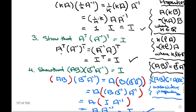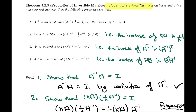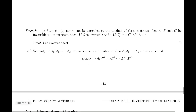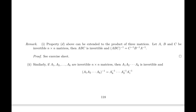We've proven all four properties. In the next video, we'll use these properties in some examples. But first, there's a remark at the end of page 118: the property showing the product of two invertible matrices is invertible can be extended to three matrices A, B, C — their product ABC is invertible and its inverse is the product of the inverses in reverse order. More generally, the product of any k invertible matrices is also invertible, with the inverse being the product of the inverses in reverse order.